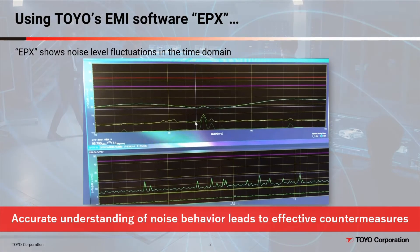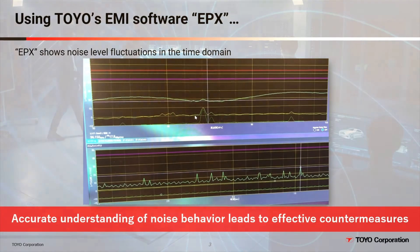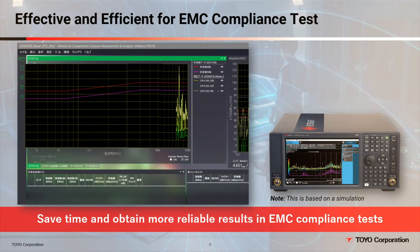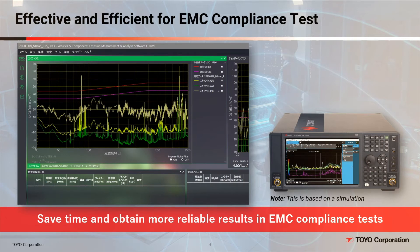It is a de facto standard for vehicle emissions test and measurement. We have shown the power of the accelerated time domain scan feature when evaluating radiated emissions from the EUT, or equipment under test. In addition to providing reliable measurement results, it allows you to characterize the behavior of noise while performing QP measurement for wideband signals. The latest Keysight EMI receiver with this feature is fully compliant with the CISPR standard, and the solution can be used for EMC compliance testing. A large number of our customers have experienced up to 50% reduction in testing time by utilizing this Toyo solution.